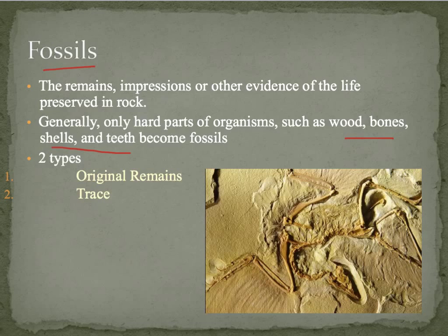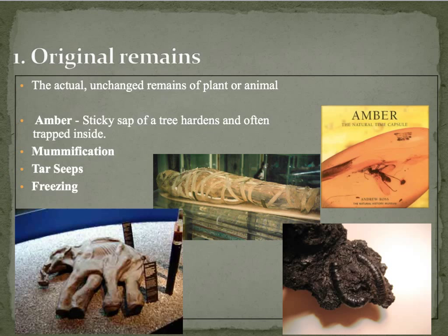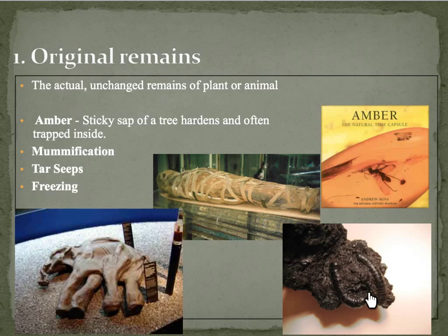There are two types of fossils that we'll talk about: original remains and trace. Original remains fossils are the actual unchanged remains of a plant or an animal. So it can be preserved in amber, like that clip from Jurassic Park, how they saved the DNA. Mummification — they've saved the remains of the human in this case. Tar seeps can preserve organisms perfectly, and also freezing will preserve organisms.